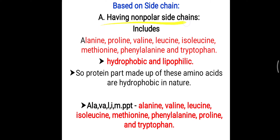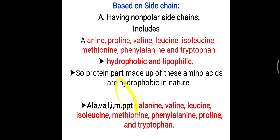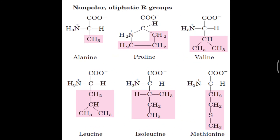You can remember all these amino acids using the mnemonic 'Allavaline PPT': Alla means alanine, valine, leucine, isoleucine, methionine; PPT means phenylalanine, proline, and tryptophan. So the mnemonic Allavaline PPT — alanine, valine, leucine, isoleucine, methionine, phenylalanine, proline, and tryptophan — makes it easy to remember all the non-polar side chain amino acids.